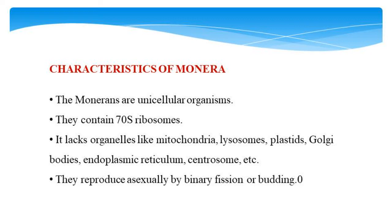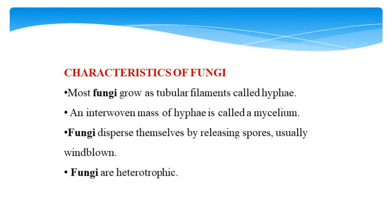Characteristics of Monera: Monerans are unicellular organisms. They contain 70S ribosomes and lack organelles like mitochondria, lysosomes, plastids, Golgi bodies, endoplasmic reticulum, and centromeres. They reproduce asexually by binary fission or budding. Characteristics of Fungi: most fungi grow as tubular filaments called hyphae, and an interwoven mass of these hyphae is called mycelium. Fungi disperse themselves by releasing spores, which are usually windblown, and fungi are heterotrophic organisms.